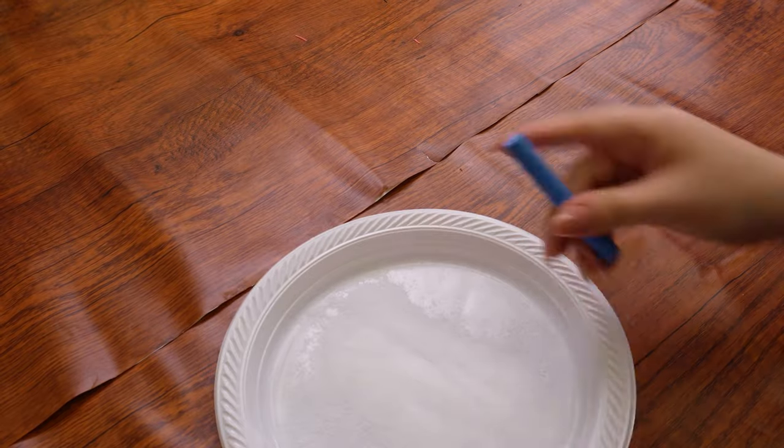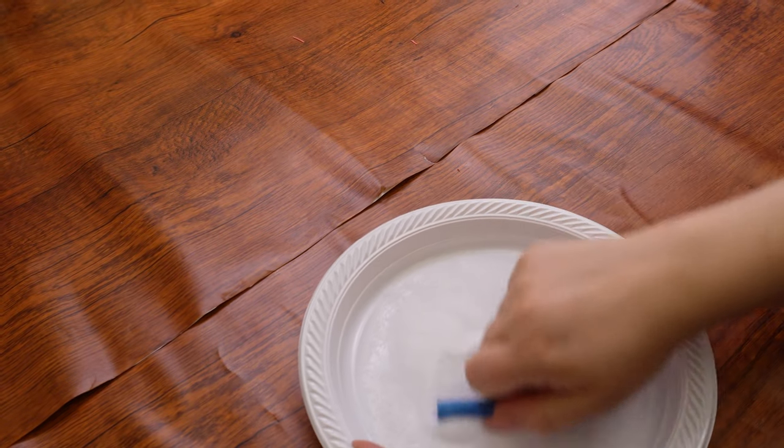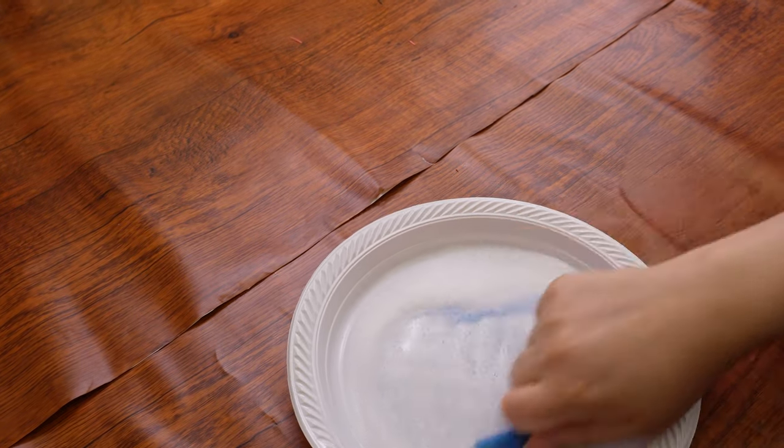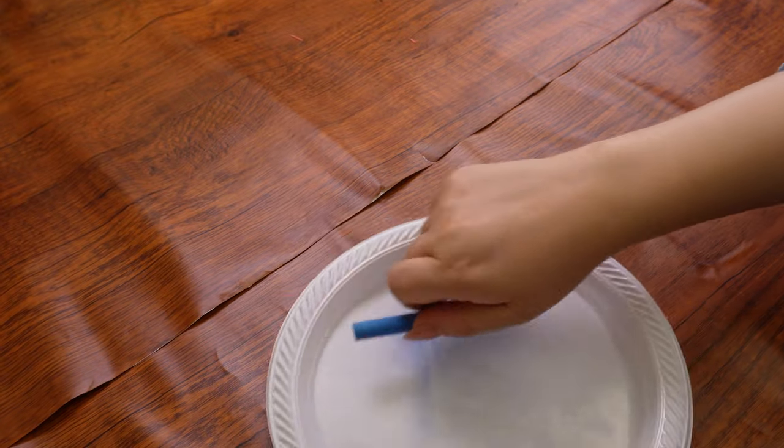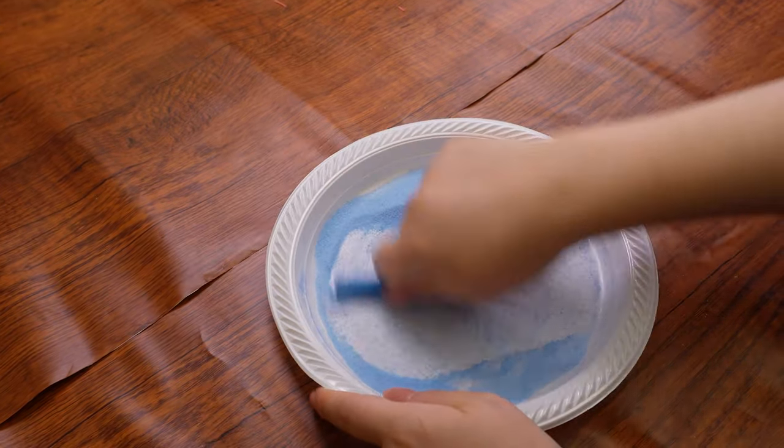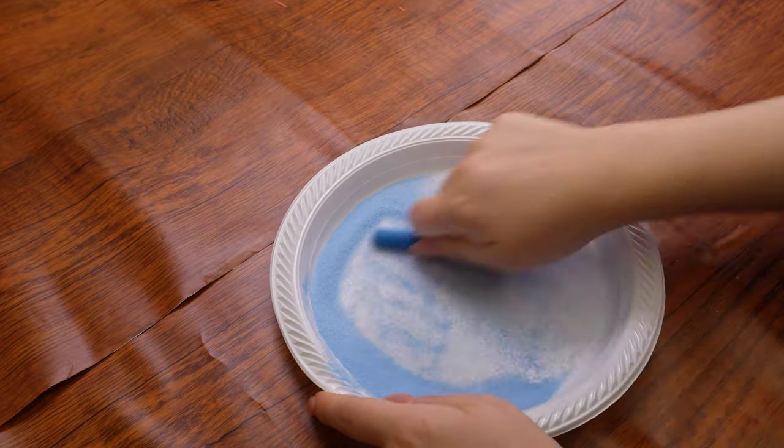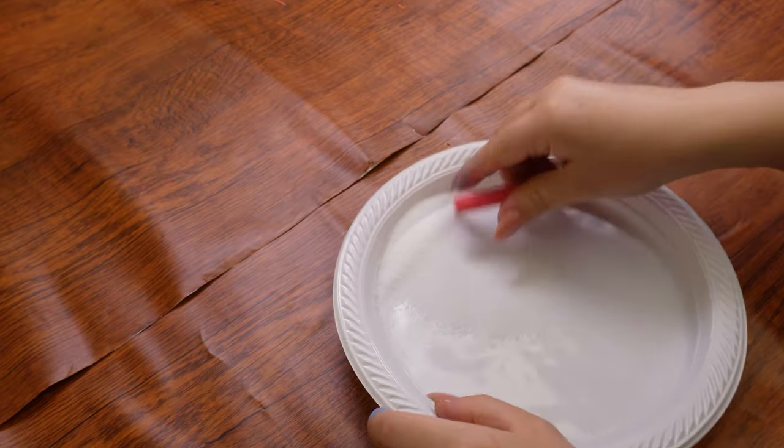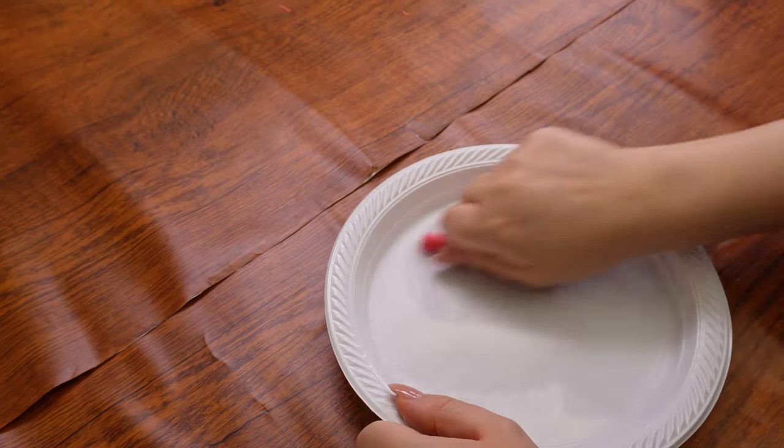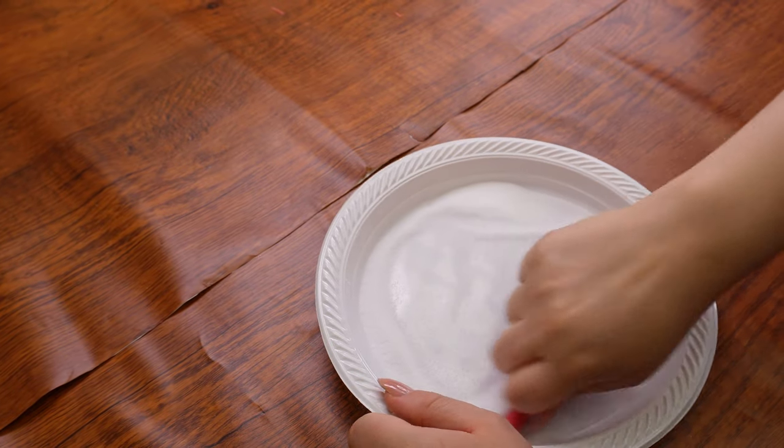Begin coloring the first plate of salt with a piece of chalk. We'll start with the blue, rubbing the salt back and forth with the chalk until it's all blue. Next, we'll do the same with the second plate of salt, except that this time we will color it red using the red piece of chalk. Lastly, we'll color the third plate of salt with yellow chalk, and for the fourth plate, we'll leave it white.